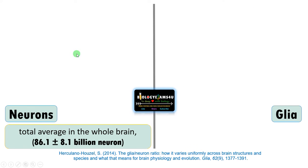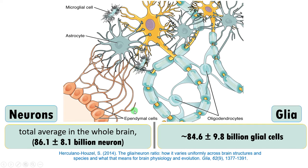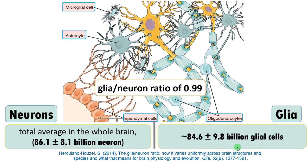Difference number three is regarding the number of glial cells and neurons. As per recent reports, the total average number of neurons in the whole human brain is 86.1 billion neurons, whereas in the case of glial cells it is around 84.6 billion. Previously it was thought that there are 10 times more glial cells than neurons, but recent studies suggest that the ratio of glial cells to neurons is 0.99 — close to one.